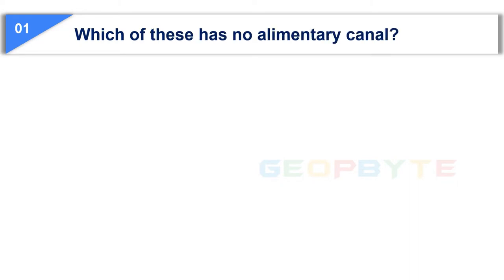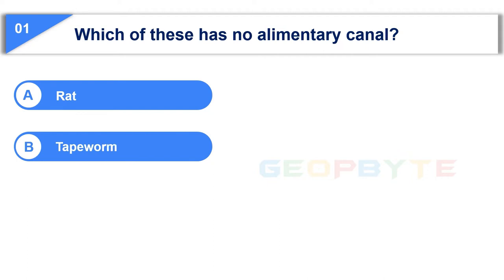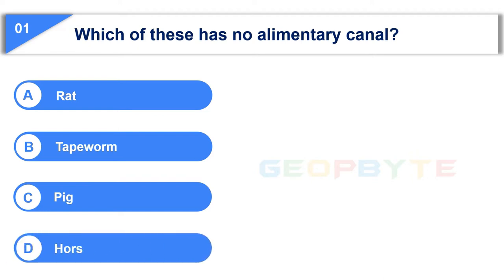The first question is: which of these has no elementary canal? Option A: Rat. Option B: Tapeworm. Option C: Pig. Option D: Horse. Your time starts now.